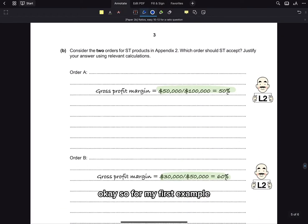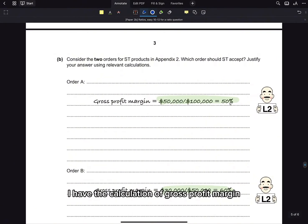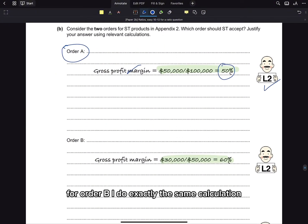Okay, so for my first example, I have the calculation of gross profit margin for order A, which is 50%. This is my first level 2 answer. For order B, I do exactly the same calculation for gross profit margin, and I get 60%, which is my second level 2 answer.